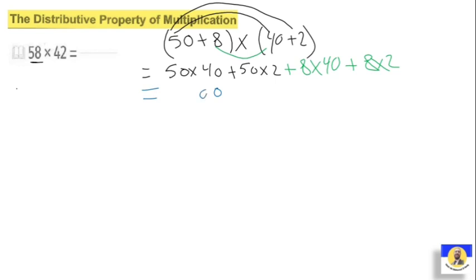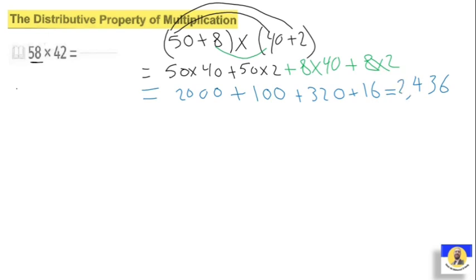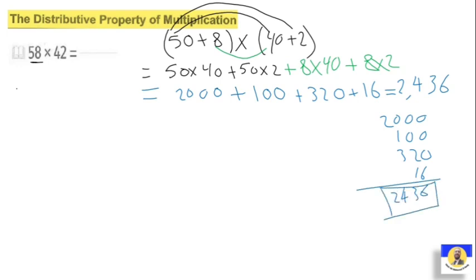Fifty by forty: put two zeros, and five by four equals twenty. Plus fifty by two: put zero, and five by two becomes ten. Eight by forty: put zero, and eight by four equals thirty-two. And eight by two equals sixteen. Then we start to make plus. Ones: one plus one plus one equals six, ten is zero. Carry: zero is two and one becomes three. Then three plus one equals four, then two. So the answer will be two thousand four hundred thirty-six.